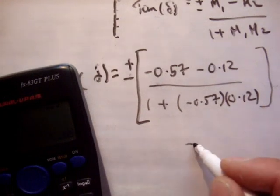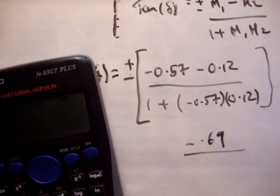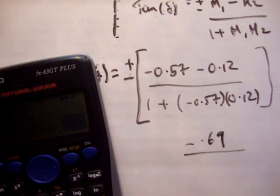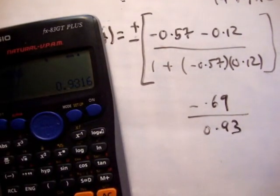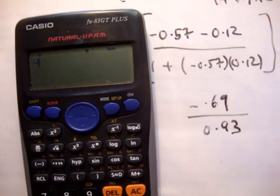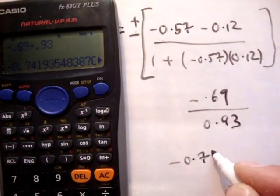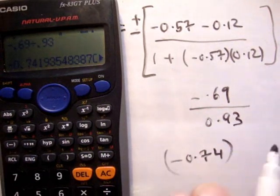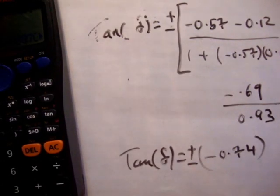So we have minus 0.57. We have minus 0.69 over 1 plus. Off of that, so we go minus 0.69, minus 0.69 divided by 0.93 is equal to minus 0.74. So we know that tan delta is equal to plus or minus that.